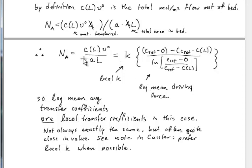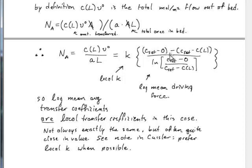What you can see here is that that log mean mass transfer coefficient is actually the local mass transfer coefficient. The log mean is just something that comes out of the integration that gives you the exponential for the rate of approach to equilibrium. So this moles per meter squared per second local mass transfer coefficient is identical to the log mean mass transfer coefficient multiplied by the log mean driving force. If you don't want to assume a concentration profile, the inlet and outlet conditions plus the saturated concentration are enough to identify a mass transfer rate.